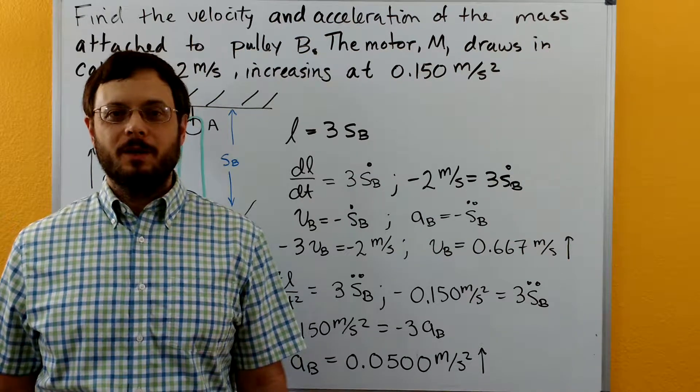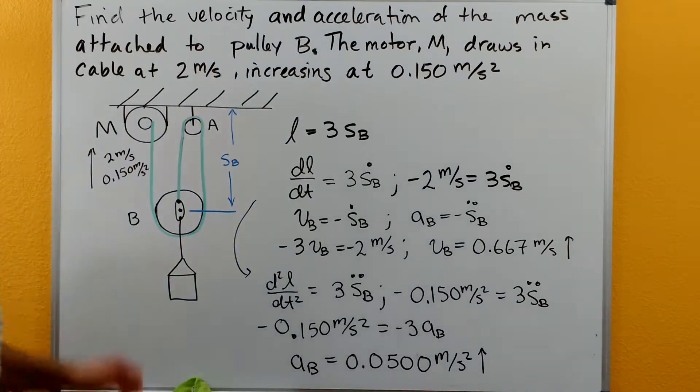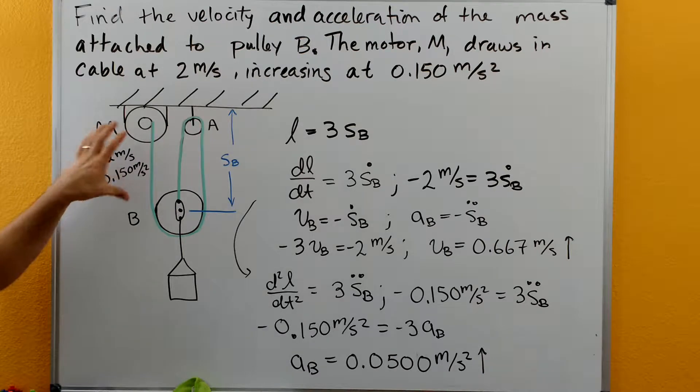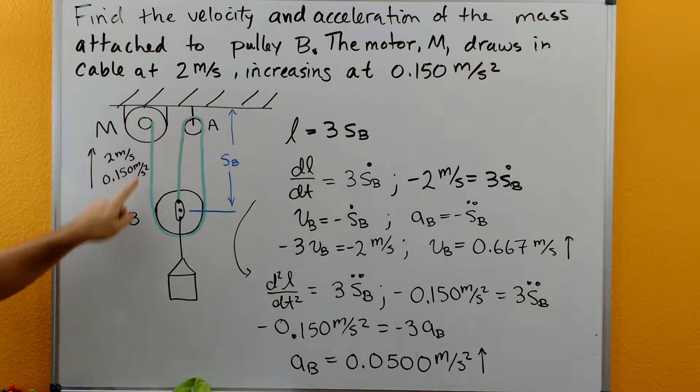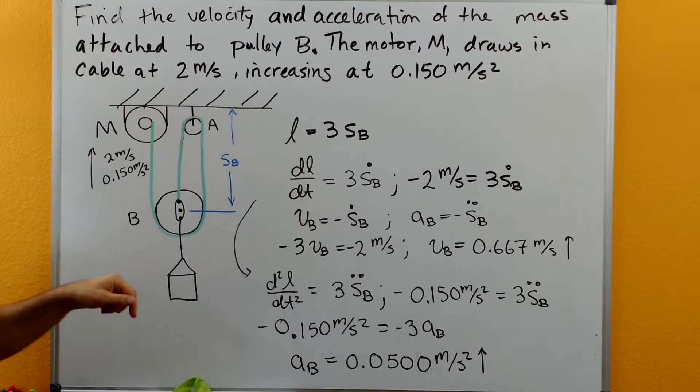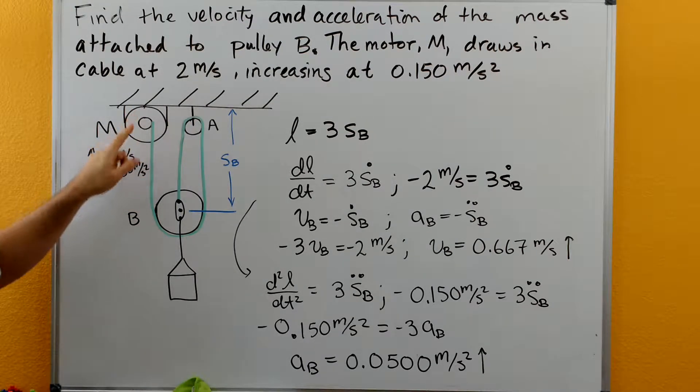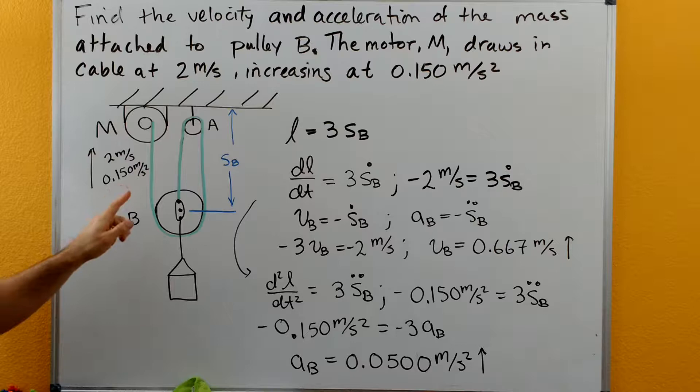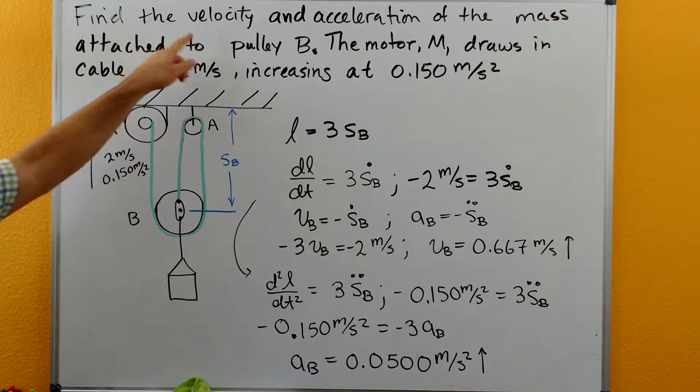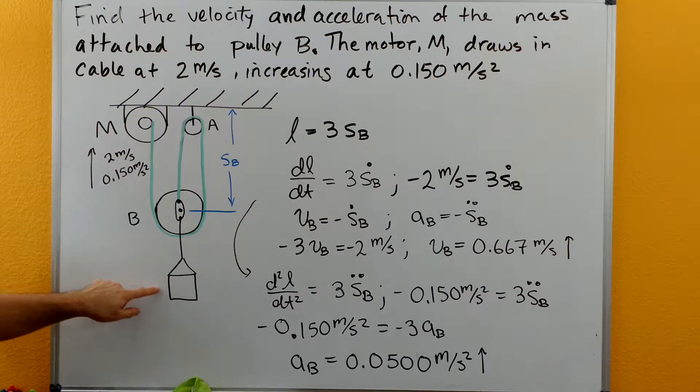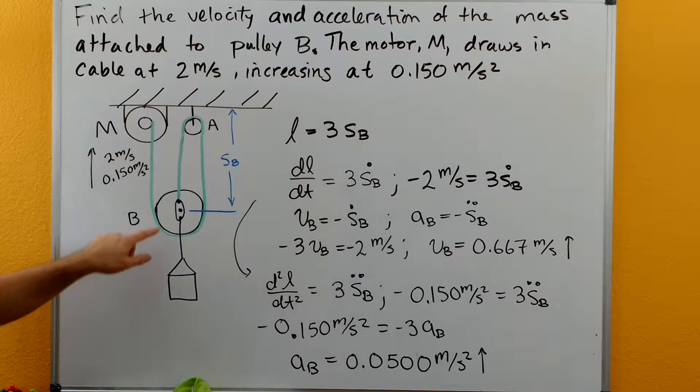Hi, welcome to the Dynamics Tutorials. With this problem we have a pulley system. We have a motor M that's pulling in rope at 2 meters per second. The motor is increasing so that it's pulling in rope at an accelerated rate of 0.15 meters per second squared, and we want to find the velocity and acceleration of the mass attached to pulley B.